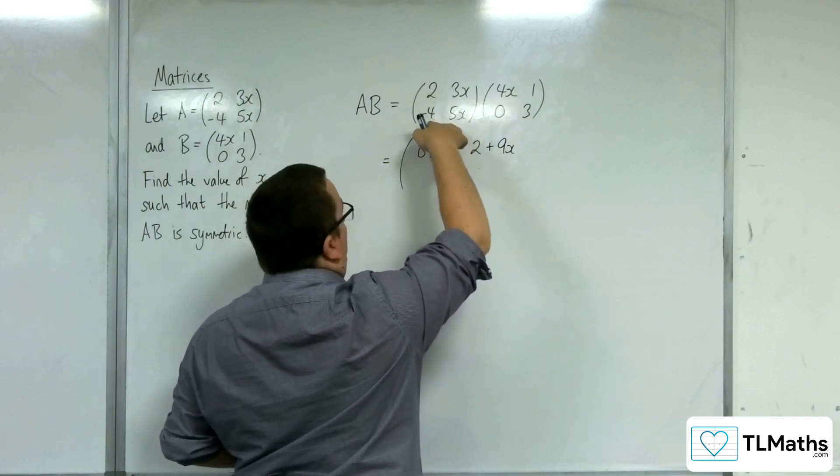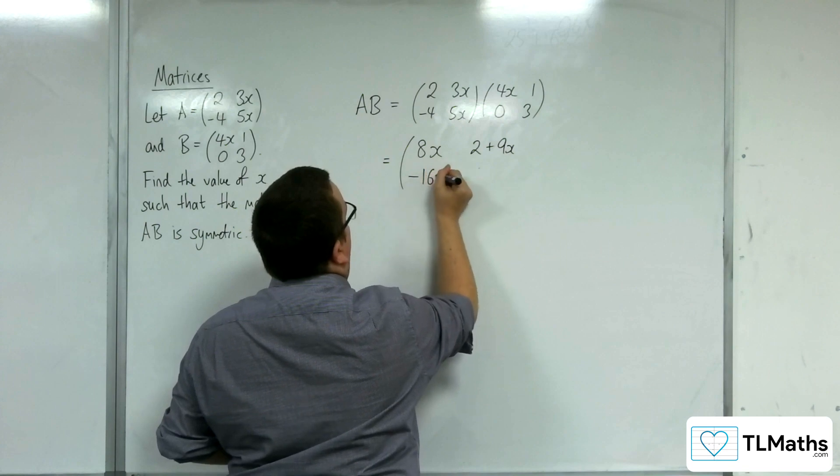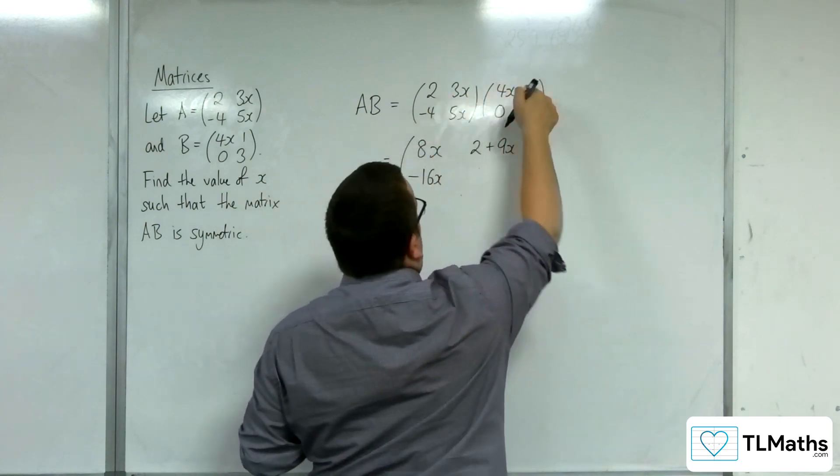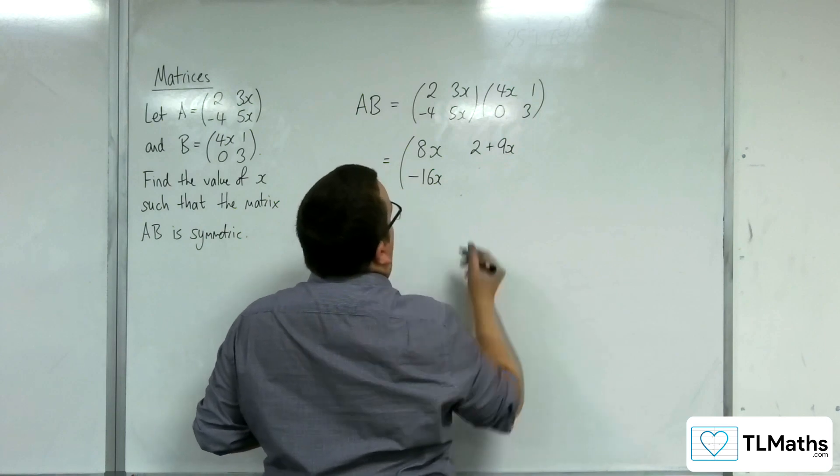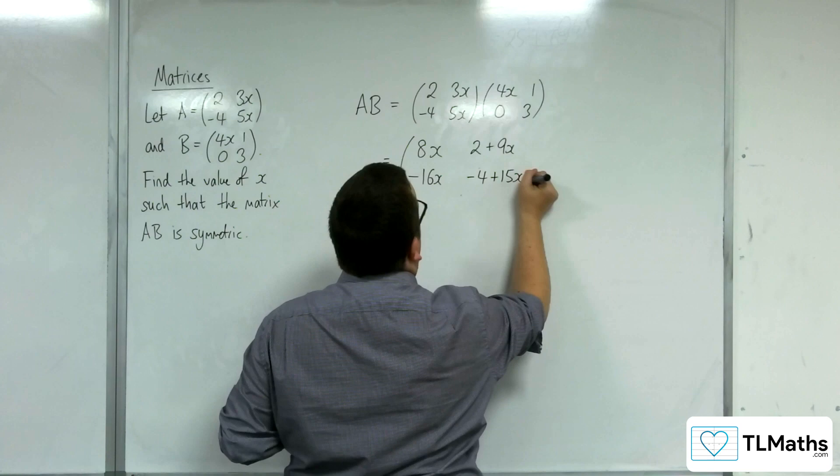Then we've got the minus 4, 5x multiplying with the 4x, 0, so that's minus 16x. And then minus 4, 5x multiplying with the 1, 3, gets us minus 4 plus 15x.